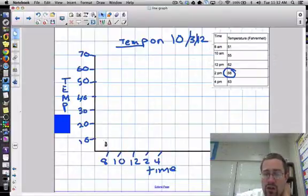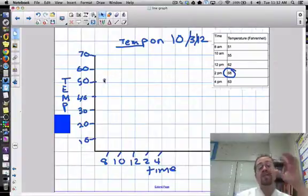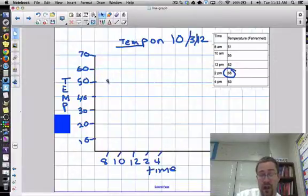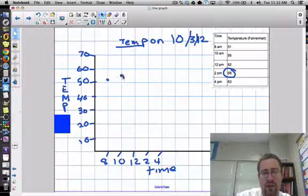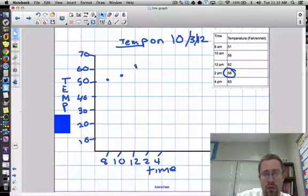8 AM is 51 degrees. So I'm going to look here and I see 8 AM. And I don't see exactly 51. So I'm going to estimate as to where I think 51 would be. It's not close to 60. It's closer to 50. So I'm going to put a dot right here. Then I go to 10 AM. It's 55. So that's right around the center here. Because 55 is equal between 50 and 60. And then we got 62. So I'm going to put it up here a little bit above 60. And then 68. That's all the way up here. And then 63. So I'm going to put it right here. So we have our data.